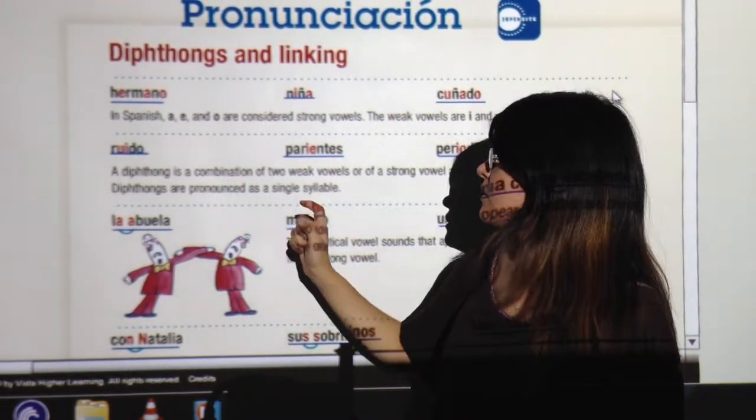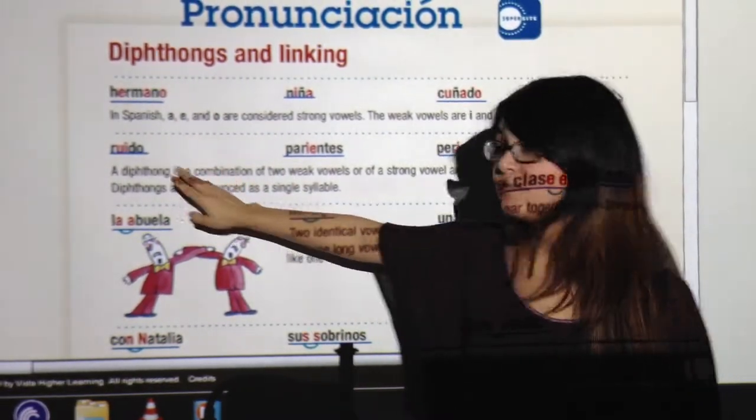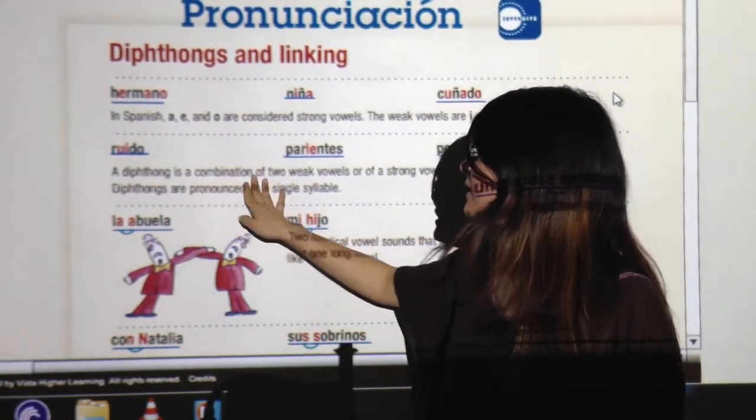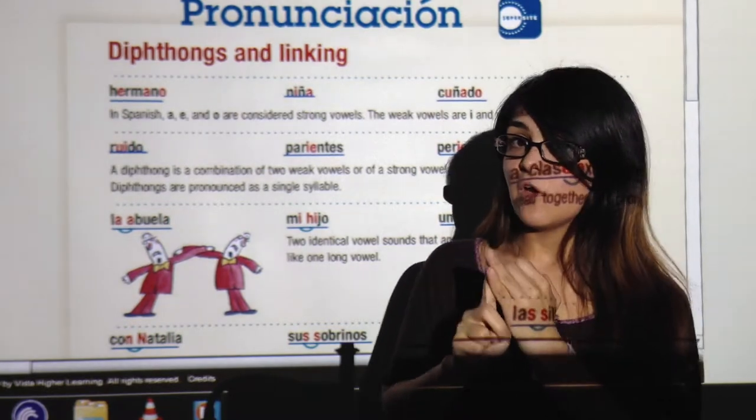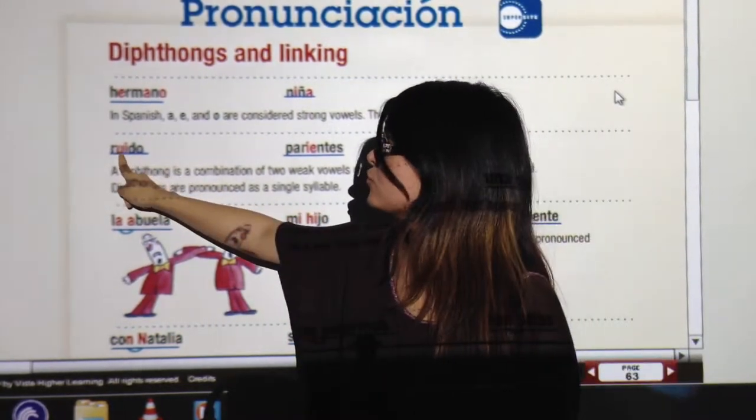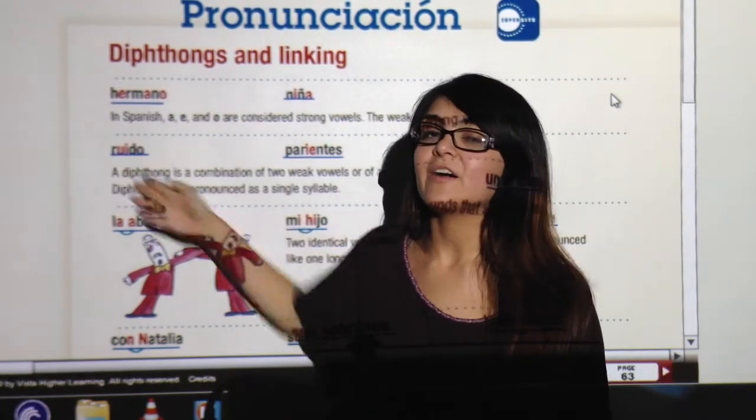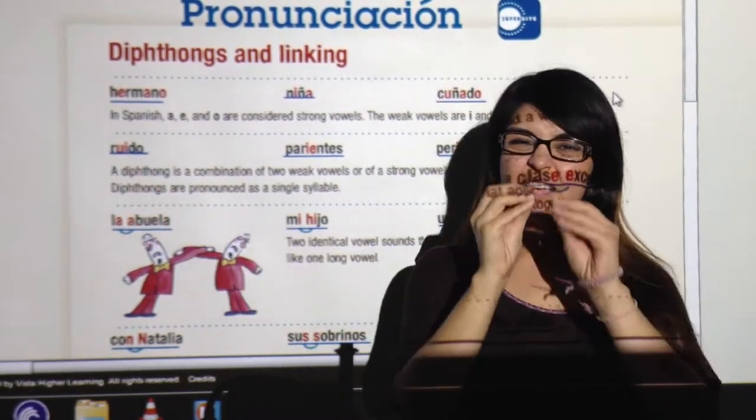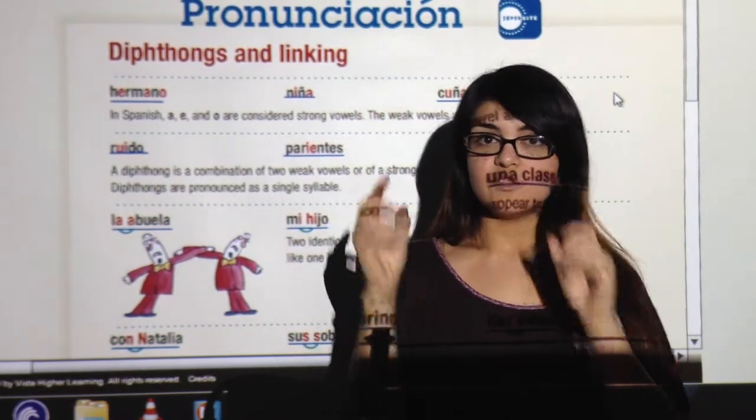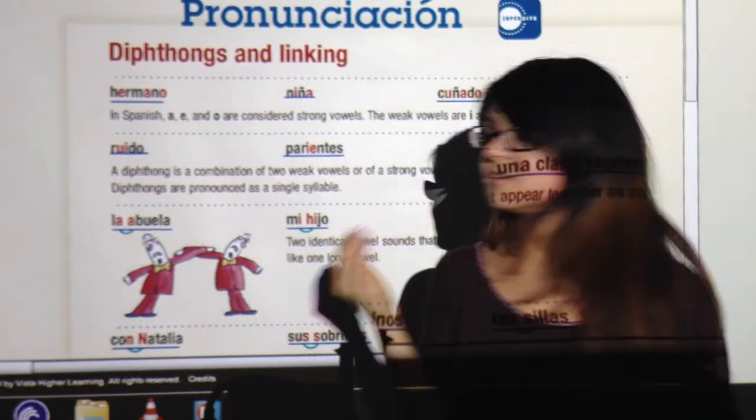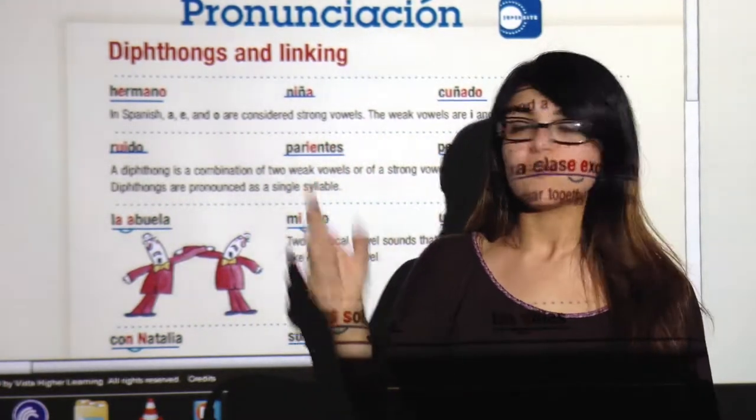Ruido. What we have here, we have a diphthong. Do you know what a diphthong is? A diphthong is a combination of two weak vowels or a weak vowel and a strong vowel. So like in here, U and I are weak vowels. Ruido. It sounds like ruido. You just say it in one syllable. Ruido. Ruido.